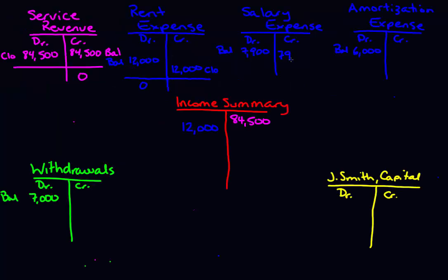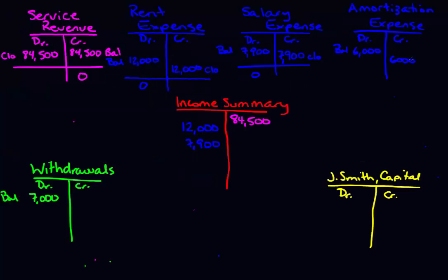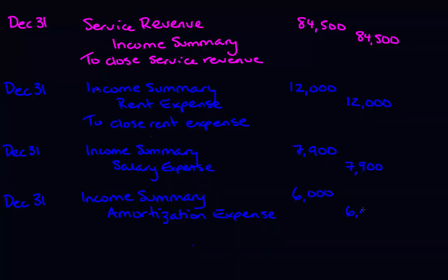We're going to do the same thing with salary expense. It has a debit balance of $7,900, so we're going to credit it for $7,900. The debit again goes to the income summary account — debit $7,900, credit $7,900. In journal entry format: debit income summary, credit salary expense for $7,900. We're going to do the same for amortization expense — credit amortization expense for $6,000, and the debit is to the income summary account for $6,000. My astute students will notice that you could have done this in one journal entry instead of three for the expense accounts.